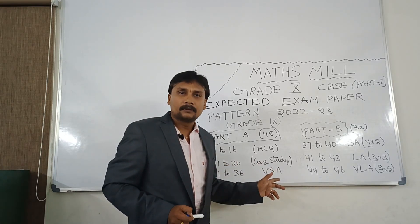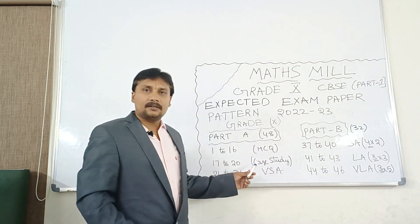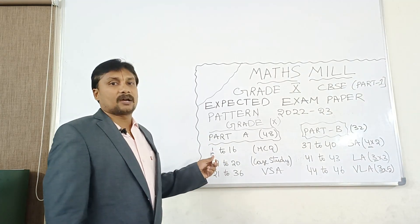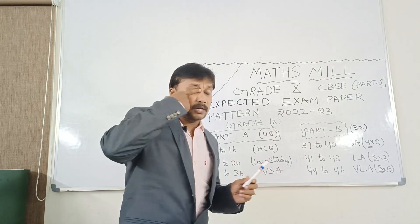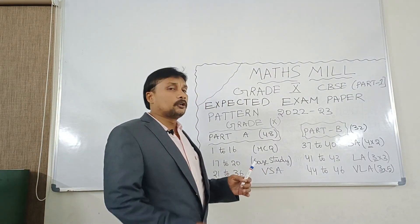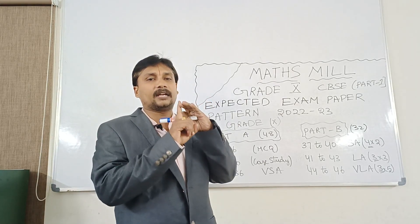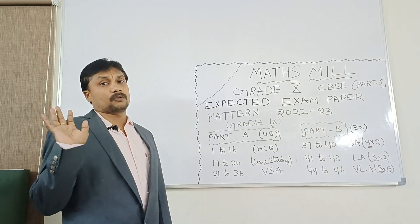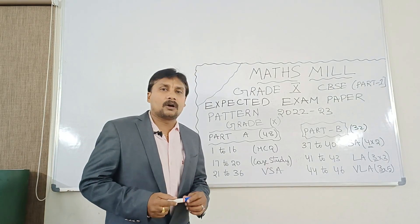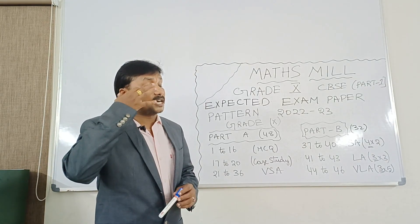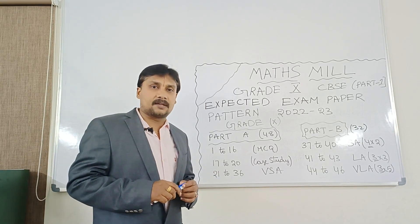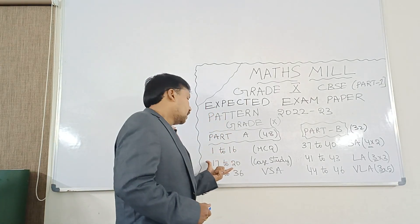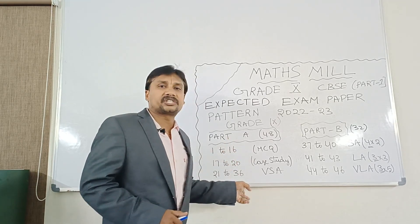Questions 17 to 20 — that is four questions — are Case Study based questions. Case study means they will give some information, and based on that they may ask you questions. Each question will carry four marks, so that is 16 marks. So 16 plus 16 equals 32 marks so far in Part A.